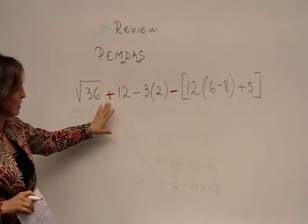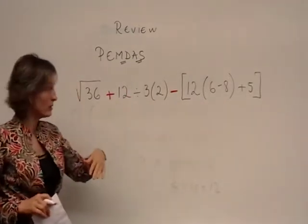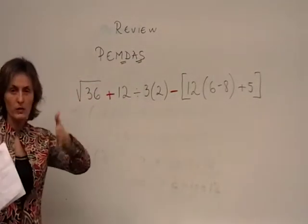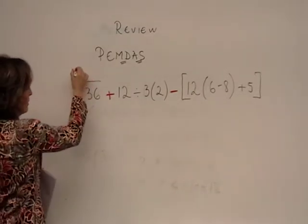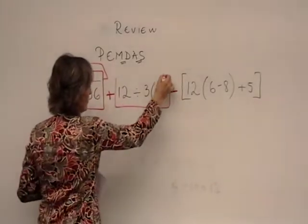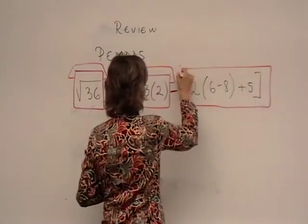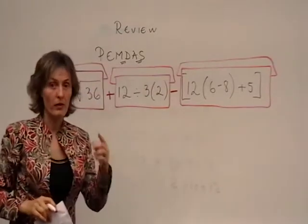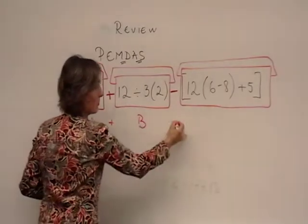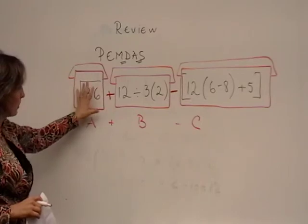I want you to consider that each sign of addition or subtraction that are not inside of parentheses, like this one for instance, or this one, are going to work like walls of separation. I want you to imagine that this is a house, this is another one, and this is another one. So, instead of one problem, I'm actually having three. Three little problems: A+B-C. And if you look to each one of them individually, they look really easy.